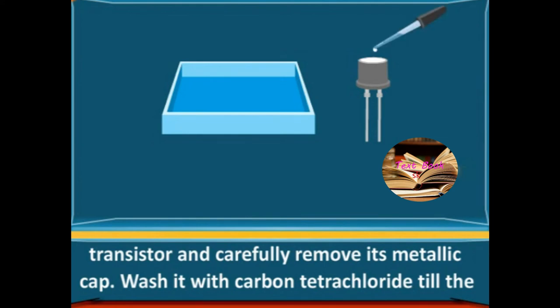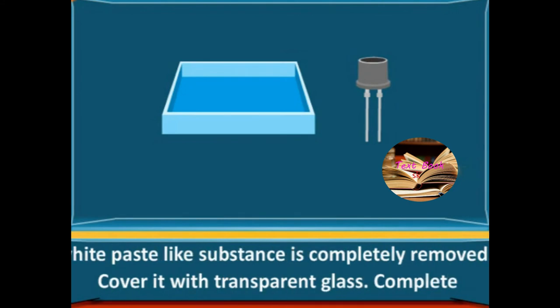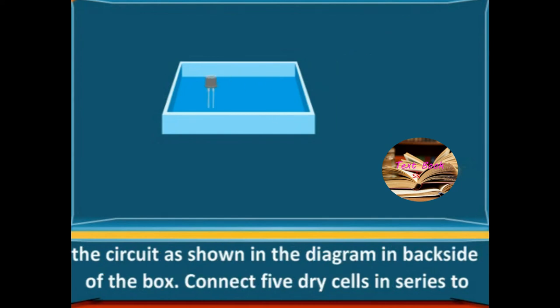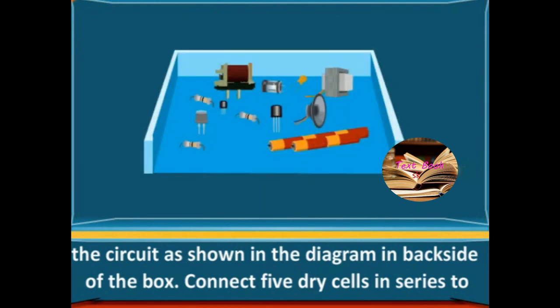Wash it with carbon tetrachloride till the white paste like substance is completely removed. Cover it with transparent glass. Complete the circuit as shown in the diagram on the back side of the box.